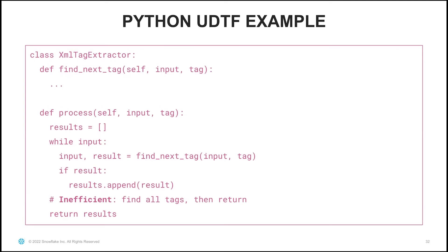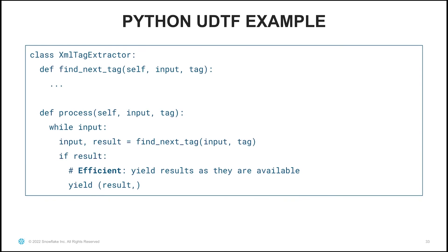In the Python UDTF example, I also have an XML tag extractor. There's a method that finds the next tag, with a while loop that builds a list of all tags and then returns them all at once — but this is inefficient because you have to find all of them before you can return. What would be better is to return them as you find them, similar to the Java UDTF example. In the good example, as I find each match, I'm calling yield to return results as they're available.